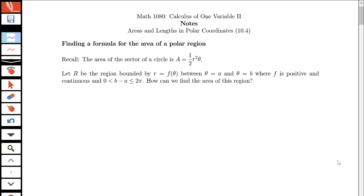In this video, we're going to be looking at deriving the formula for the area of a polar region. So it'll be useful for us to recall that the area of a sector of a circle is this formula: A equals one-half r squared theta.